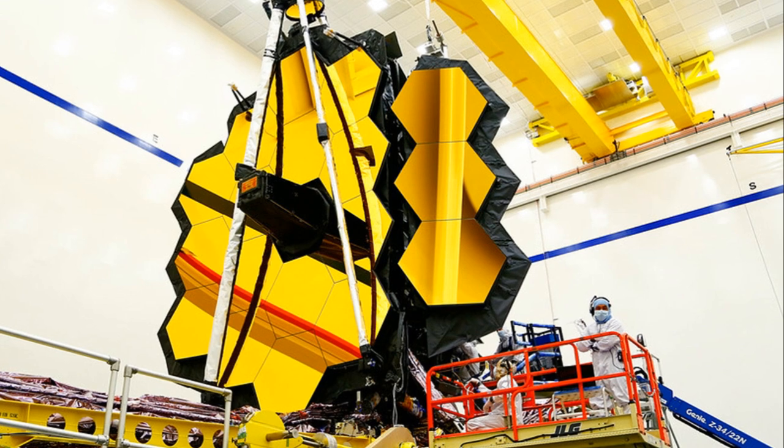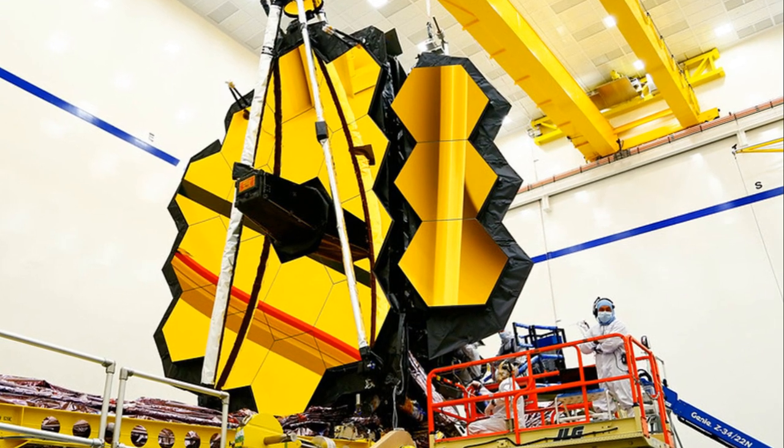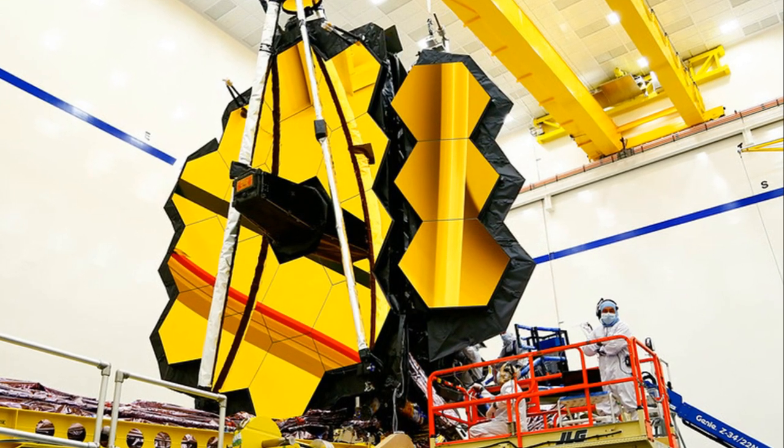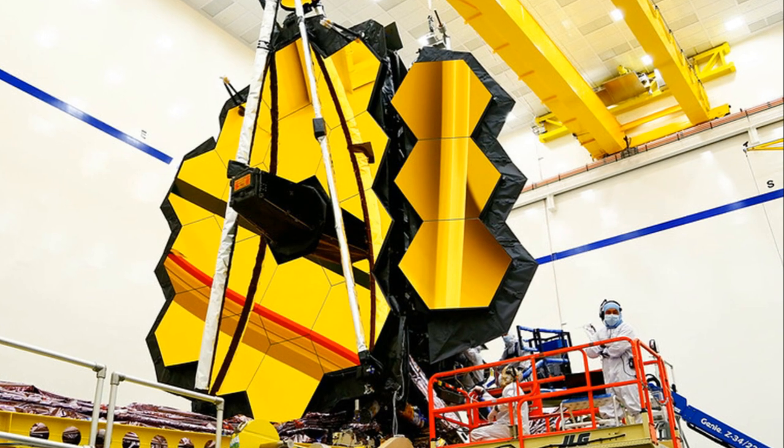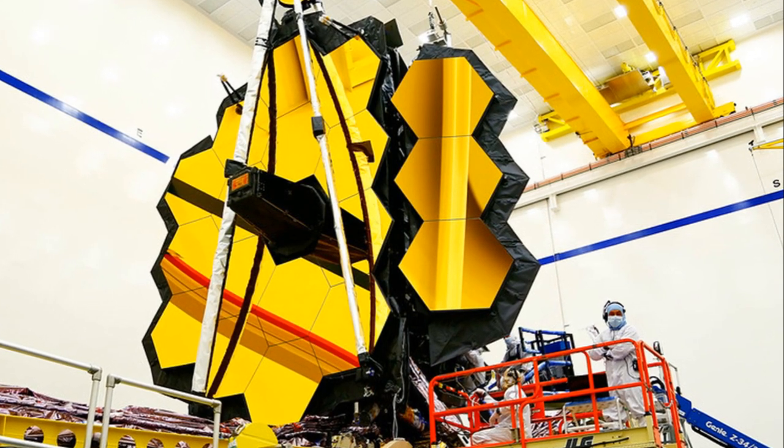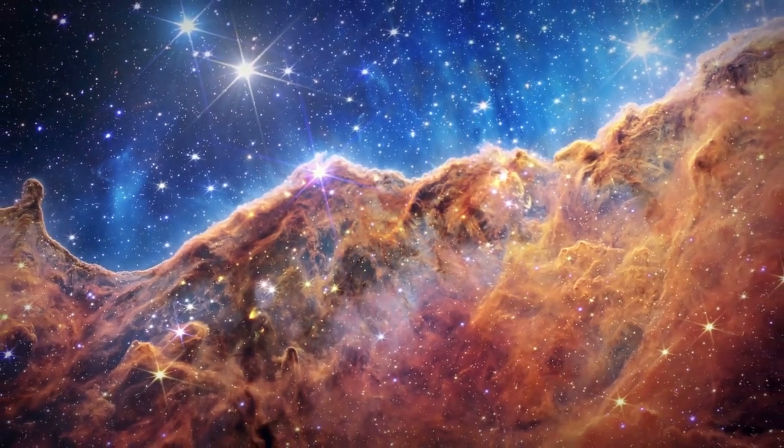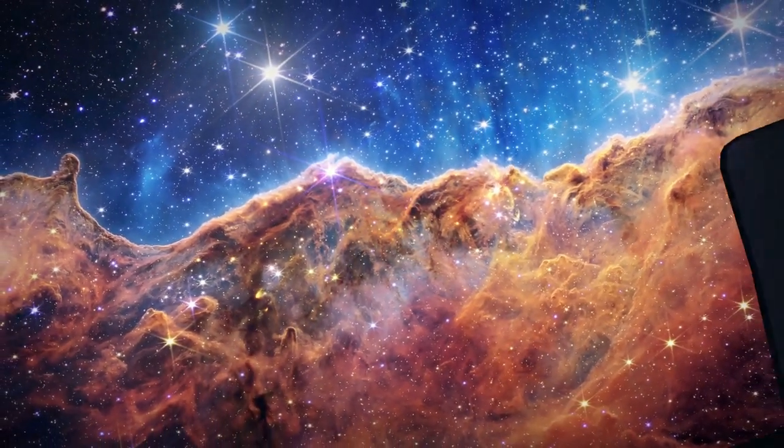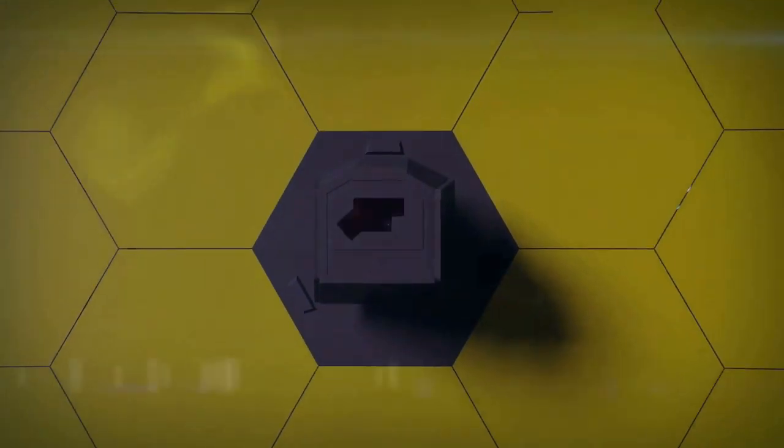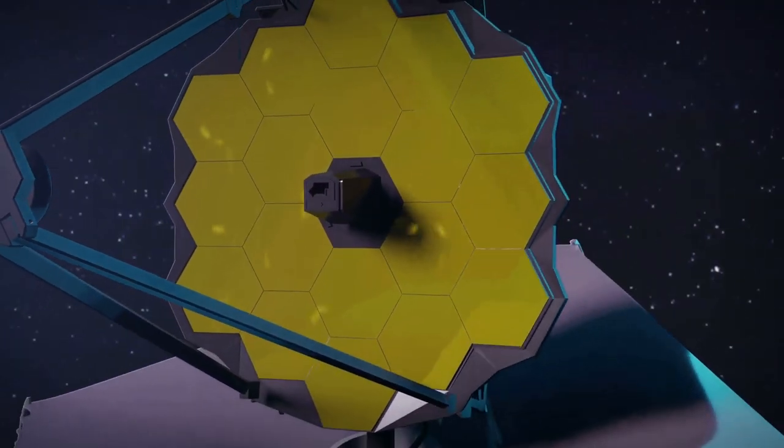With its golden mirror, nearly two and a half times the size of the Hubble Space Telescope's, the JWST is designed to capture light from the farthest reaches of the universe. This light, carrying with it the tales of cosmic evolution, allows us to study everything from the formation of stars and galaxies to the potential existence of alien life.